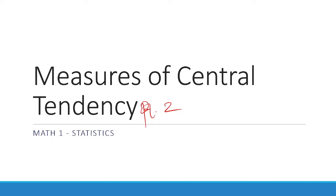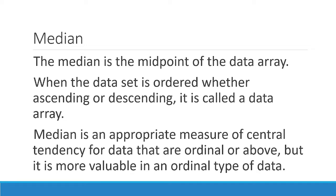Let's first define median. Median is the midpoint of a data array. A data array is ordered — whether ascending or descending. If you have an interval or ratio level of measurement data, you need to arrange them from highest to lowest or lowest to highest, and the median is the middle portion of that data array.